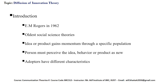The adoption of a new idea or behavior doesn't happen simultaneously in a social system. It is a process whereby some people are more apt to adopt the innovation than others. Researchers have found that people who adopt an innovation early have different characteristics than those who adopt it later. When promoting an innovation to a target population, it is important to understand the characteristics of that population, as this will help with adaptation.